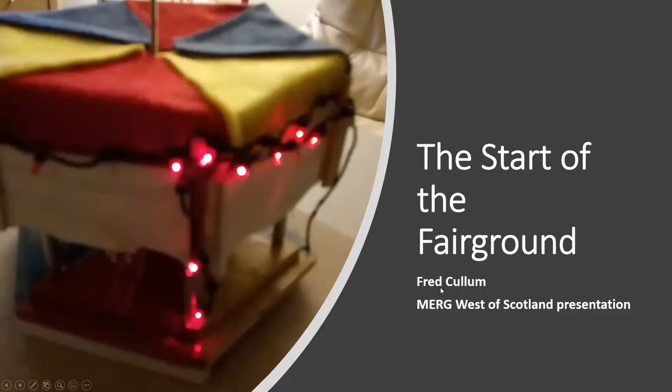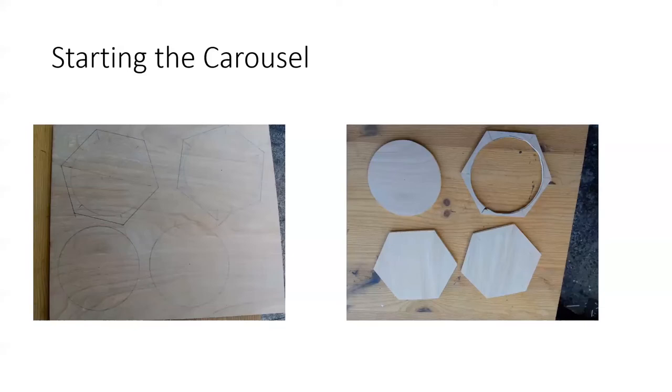So plywood was the main part of the build, apart from some brass studding and some aluminum tubing. So throwing out the shapes and you can see on the left hand side the drawings and then the cut pieces which were cut using a tabletop bandsaw and a bit of sandpaper and just tidying things up.